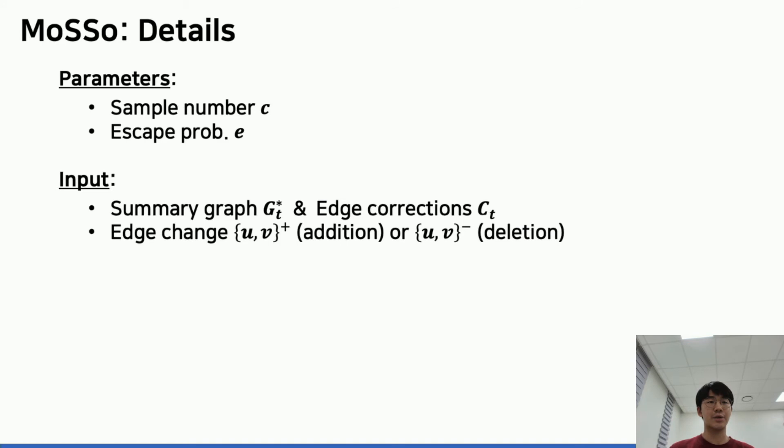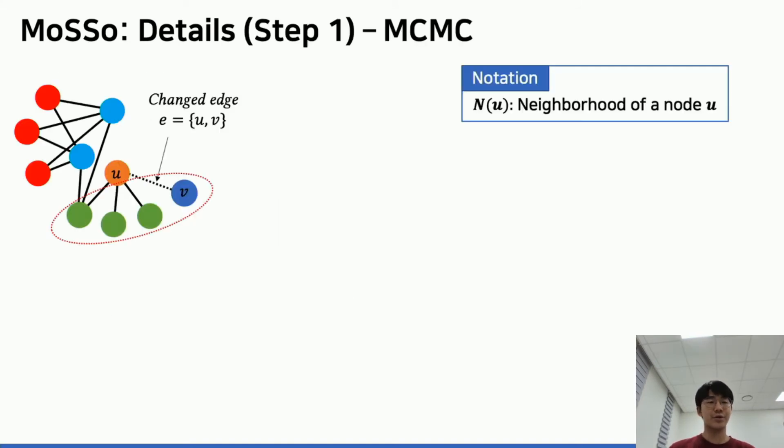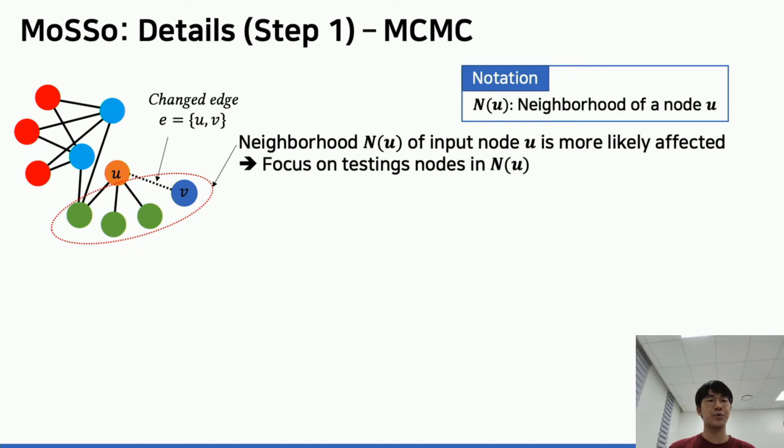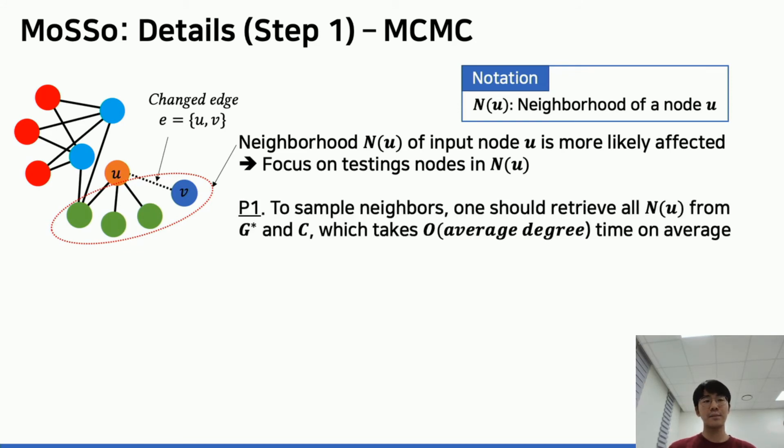MoSso requires two parameters: sample number and escape probability, which are introduced in detail later. When it retains a summary graph and edge corrections at time t and is given an edge change, it returns an updated summary graph. When an edge uv arrives, nodes around the edge are more likely affected, so it's reasonable to focus on the neighborhoods of nodes u and v. When sampling testing nodes from the neighborhood, we may need to retrieve all neighbors, which usually takes the average degree of the graph.